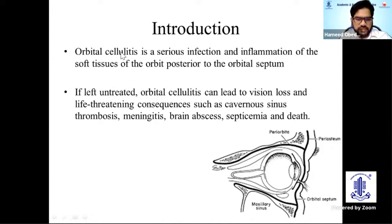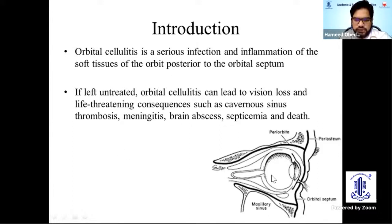If left untreated, it can lead to loss of vision and life-threatening consequences such as cavernous sinus thrombosis, meningitis, brain abscess, septicemia, and death. Orbital cellulitis involves the tissues behind the orbital septum, and preseptal cellulitis involves the tissues anterior to the orbital septum.